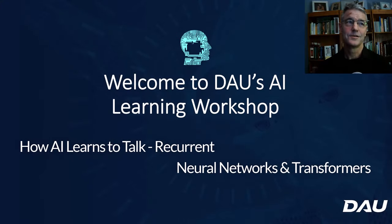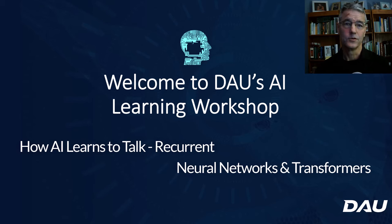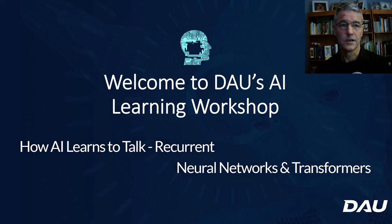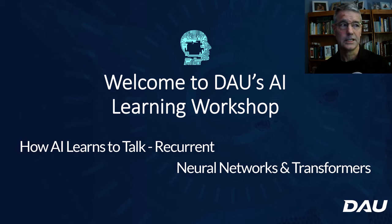Greetings. Welcome to DAU's AI Video Learning Series. Today we're going to investigate how AI learned to talk, and explore the evolution of neural networks being used as natural language processors. We're going to take this all the way from recurrent neural networks, all the way through transformer architectures — the architectures behind ChatGPT, BARD, and the Gemini models. So let's get to it.